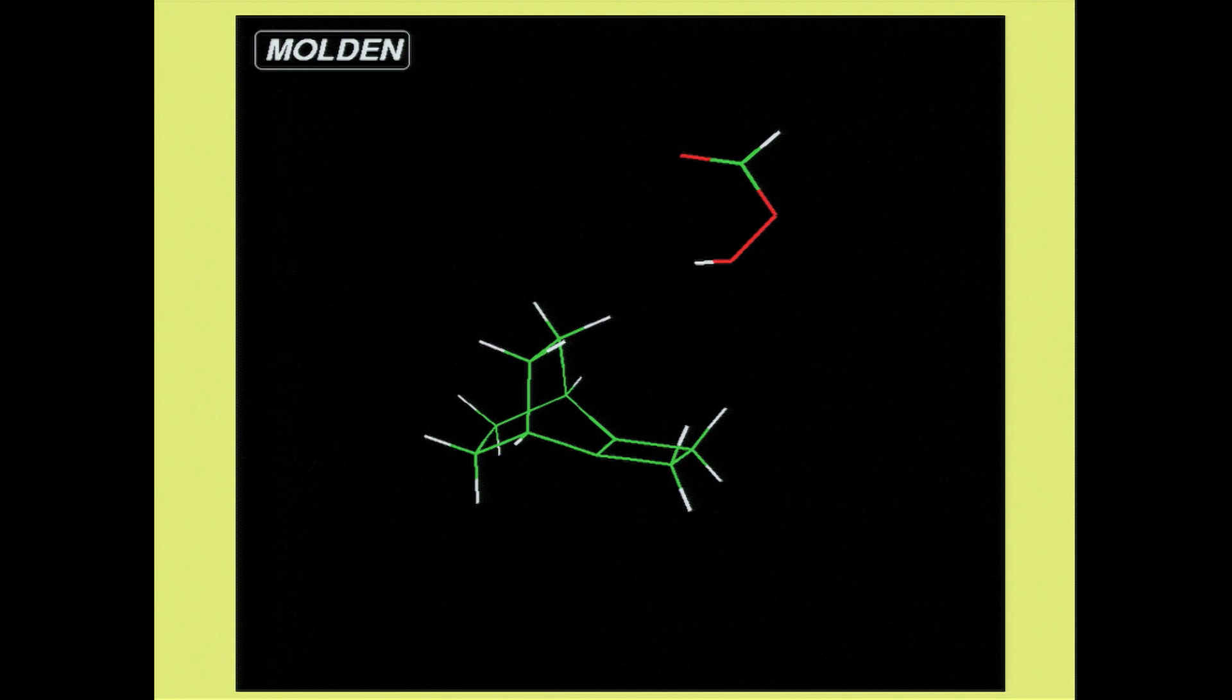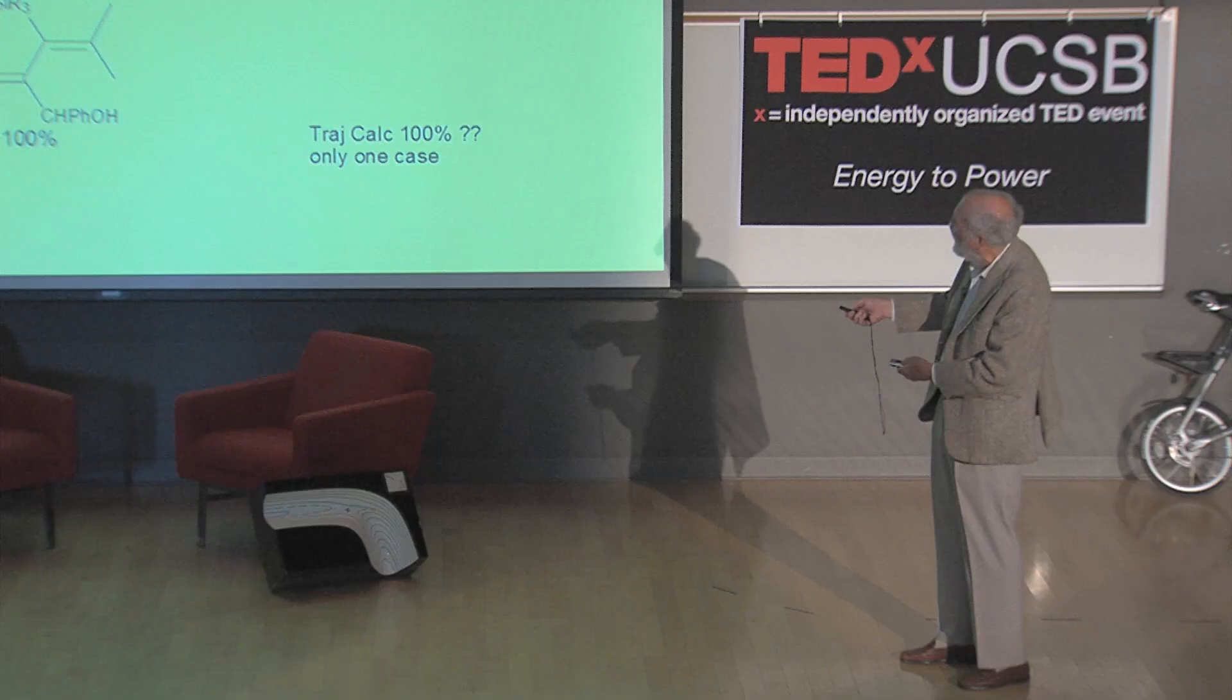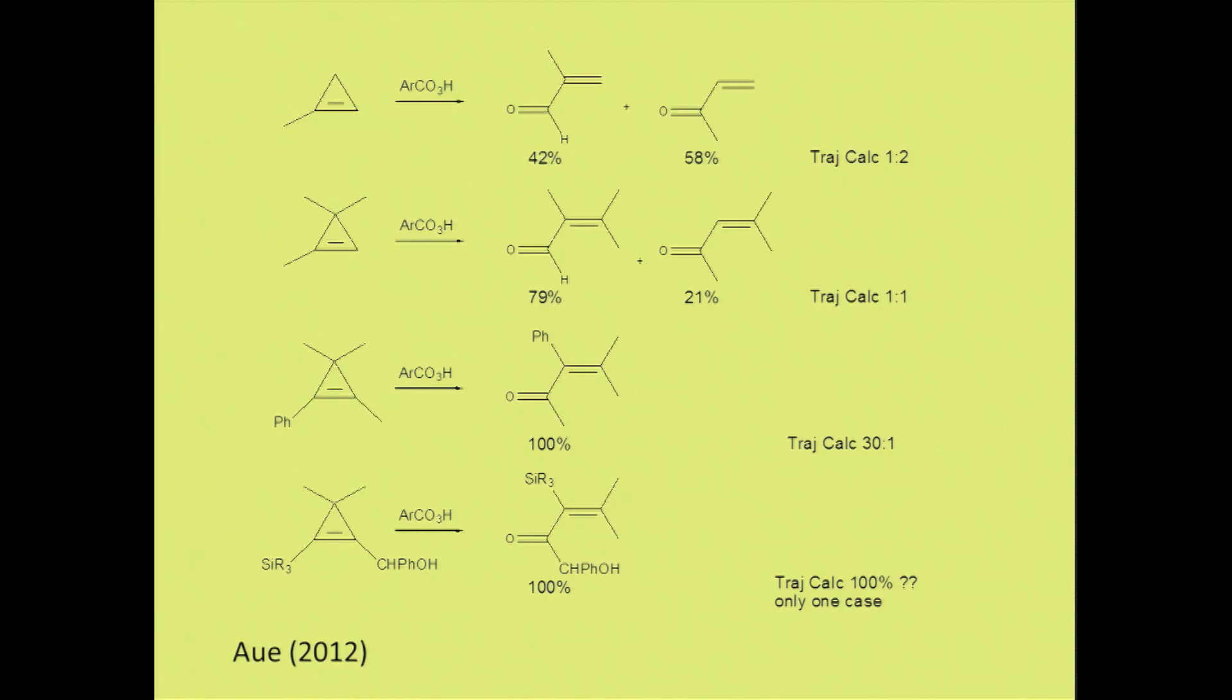Just to give you an idea of some other situations where this can happen. Since we first studied these things, we've looked at other epoxidations, other oxygen transfer reactions. Here's a whole series of cyclopropenes with three-membered ring double bonds that give two products, and we can pretty closely calculate the experimental ratios of products. It's not perfect, but we can do pretty well.